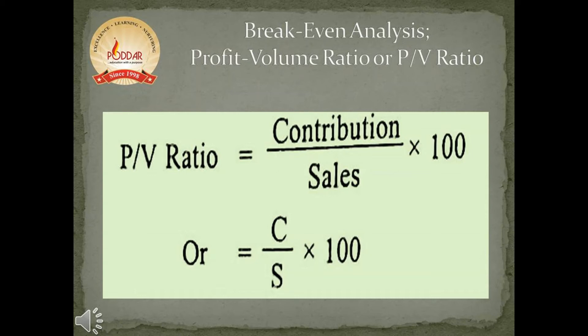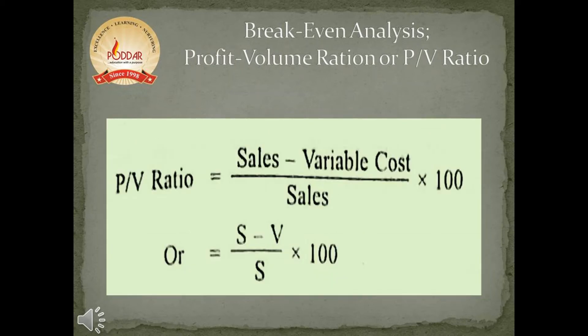The second method of break-even analysis is profit volume ratio, or PV ratio. PV ratio is calculated as contribution divided by sales, and the resulting figure is multiplied by 100. Please note that PV ratio is always calculated in percentage. It can also be calculated using sales and variable cost figures as: sales minus variable cost, whole divided by sales, multiplied by 100.